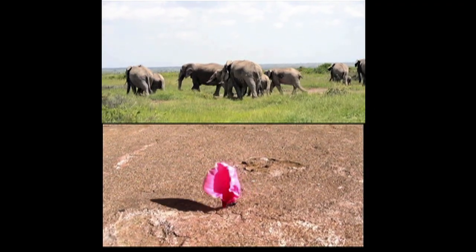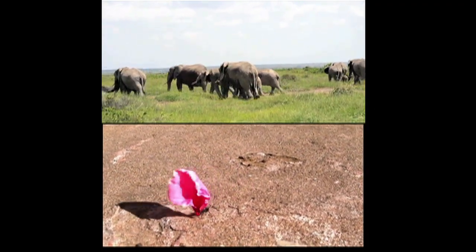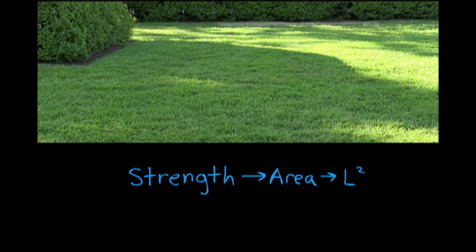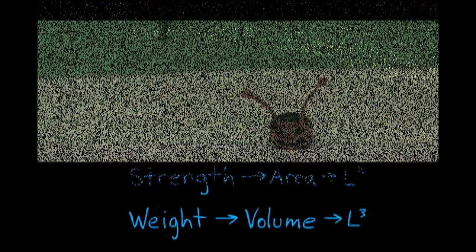For a similar reason, an ant can carry more relative to its body weight than an elephant. And this is also the reason why monster ants do not exist. Strength is proportional to the cross-sectional area of their legs, while weight is proportional to their volume.